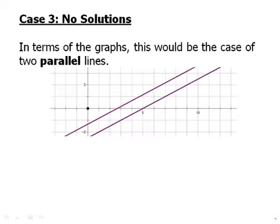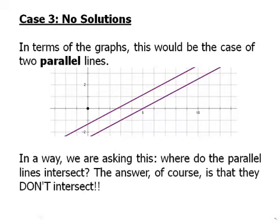In terms of the graph, this should be the case of parallel lines. We pick two lines at random, and just by pure chance, we happen to pick two parallel lines. In a way, we're asking, where do the parallel lines intersect? The answer, of course, is that they don't. Parallel lines never intersect.